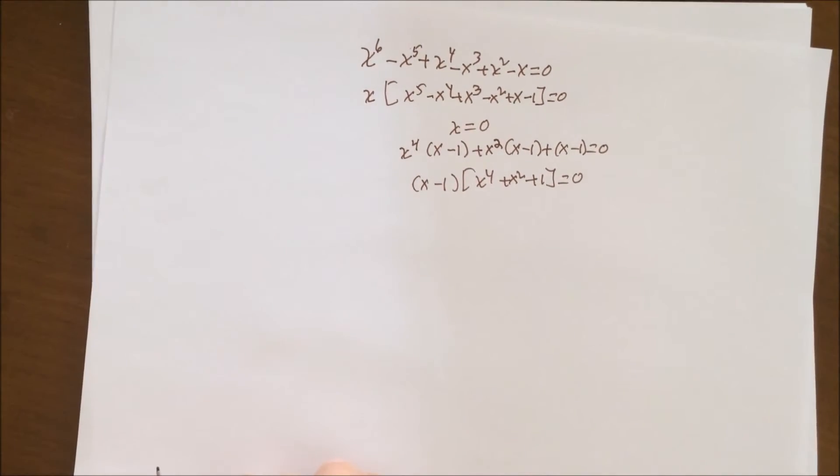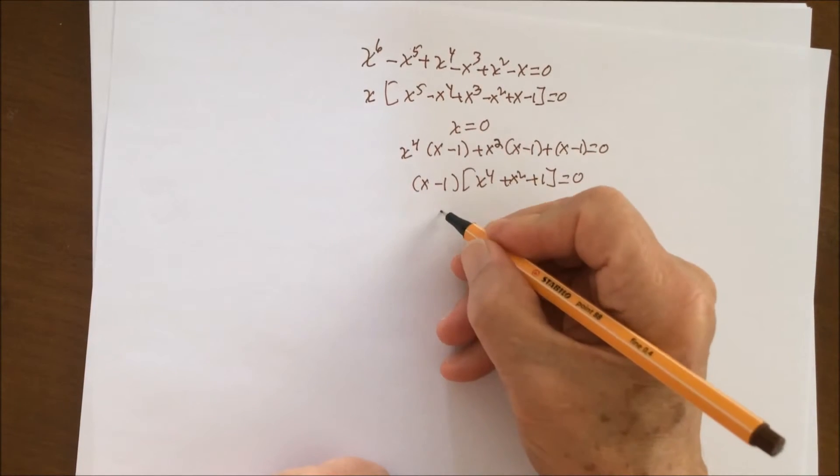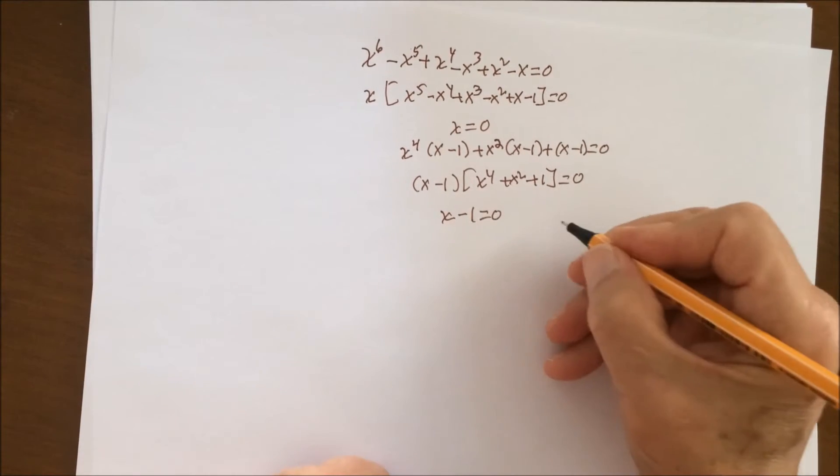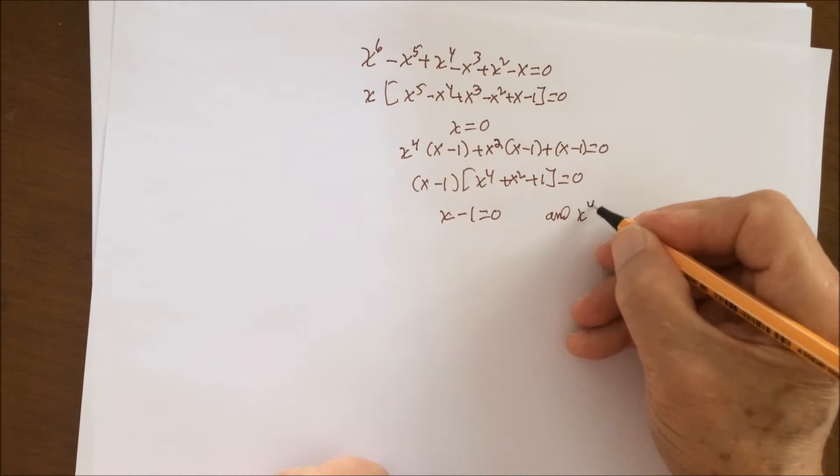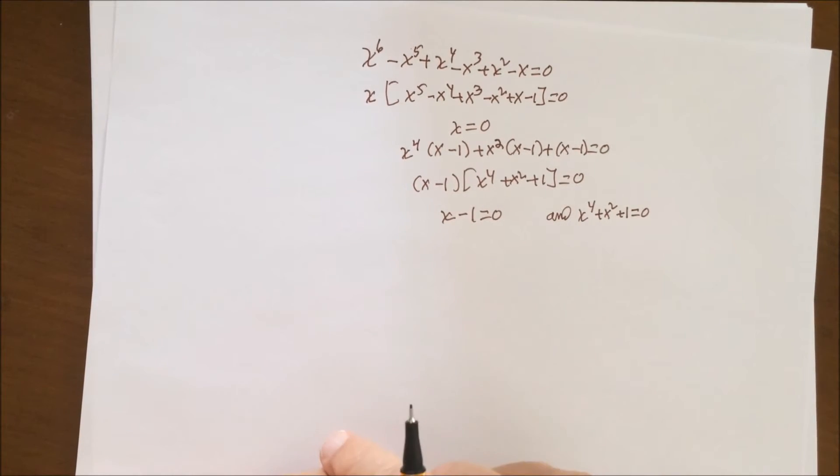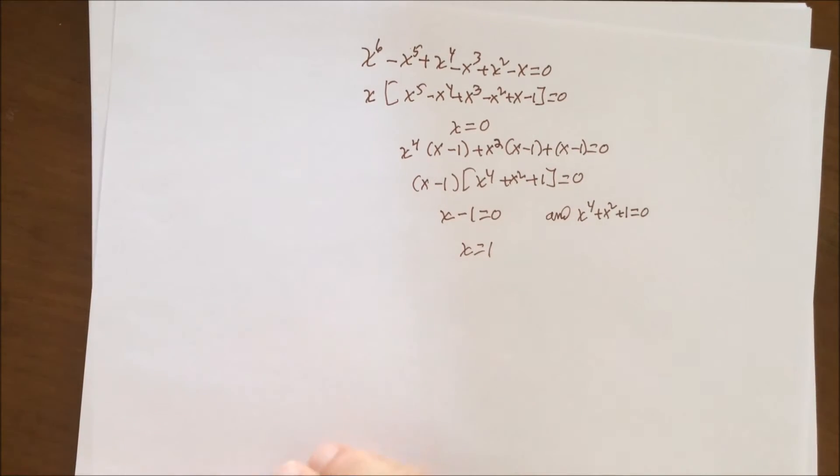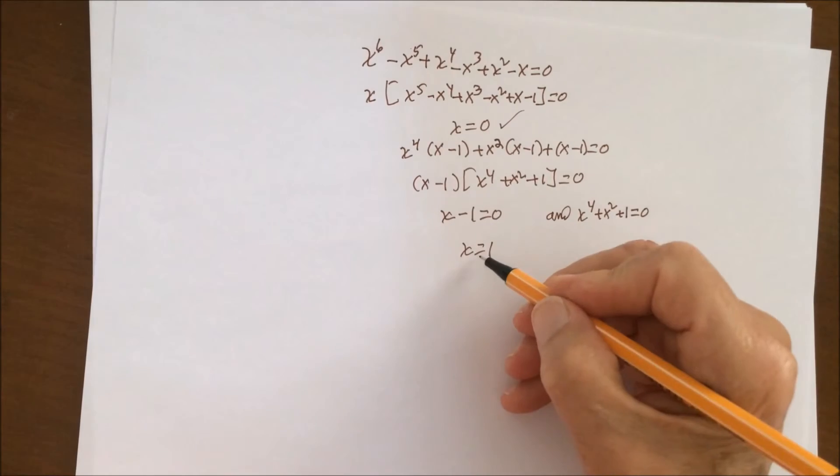Once again we have the product of two terms equaling zero, so at least one of the terms, if not both, must be equal to zero. In this case it is obvious we'll set each of the terms equal to zero, and we get x minus one equals zero and x to the fourth plus x squared plus one equals zero. Now, x minus one equals zero gives us x equals one. So that's the second solution. At this point we have two solutions, two real solutions to this equation: x equals zero and x equals one.